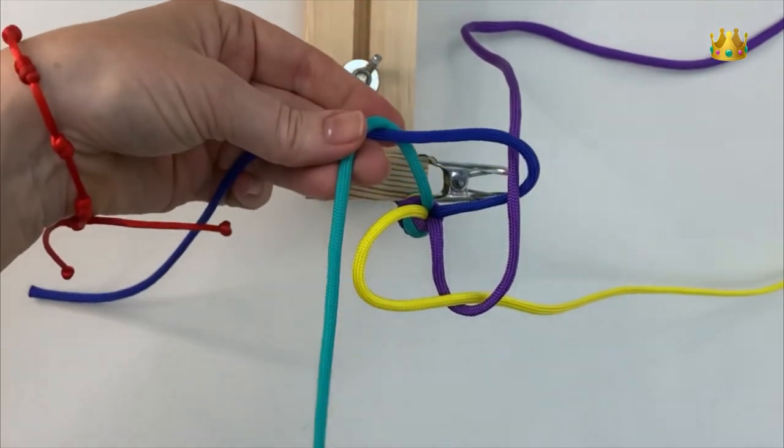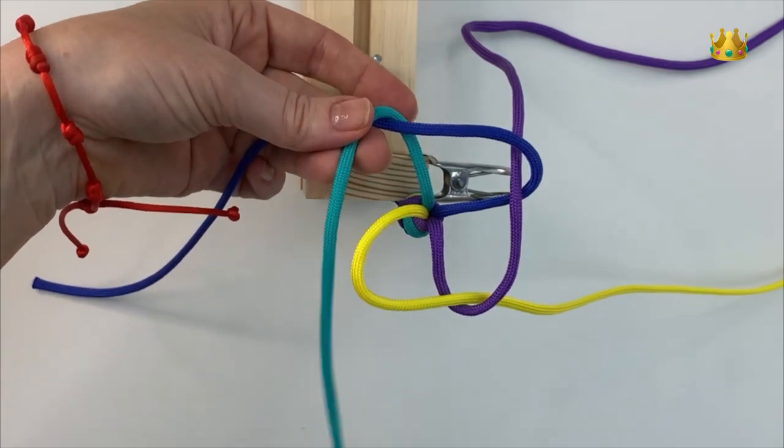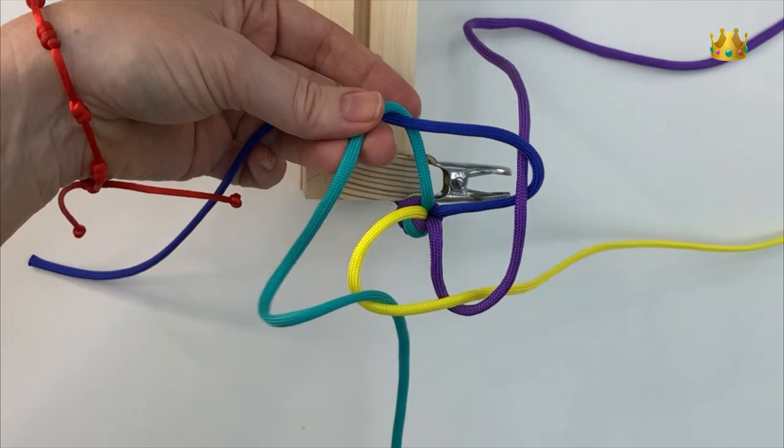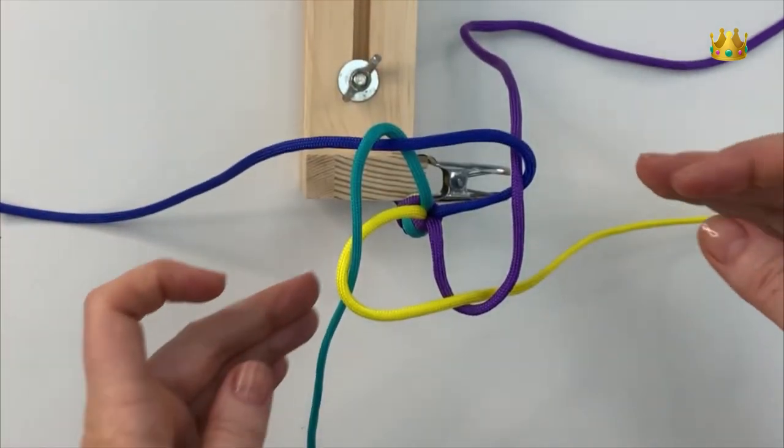Now because we're back at our first cord this green cord needs to come down the loop, so down that yellow cord loop there. And if you've done all your loops right you should have four even sections in the middle here.